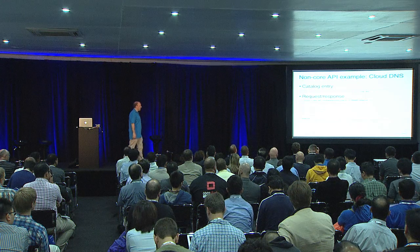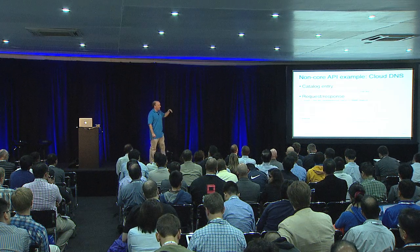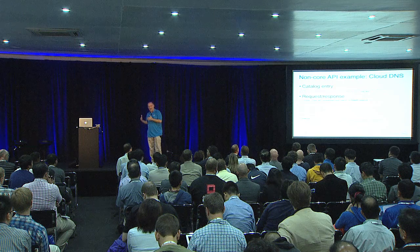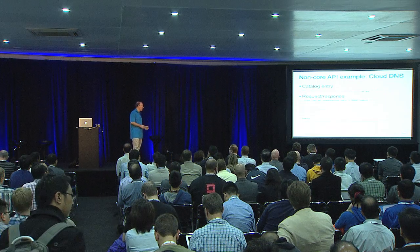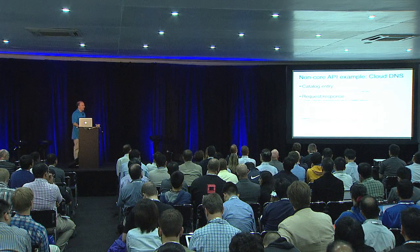For a non-core API like Rackspace Cloud DNS, the catalog entry type is 'rax:dns.' If my code doesn't handle DNS as a service, I ignore that entry. If my code handles HP's DNS differently, I also ignore this Rackspace-specific entry. With Dasein Cloud, I can support both — when I see 'rax:dns,' I know to use the Rackspace DNS APIs, not HP's. The request goes to slash domains and I get back a domains data element.